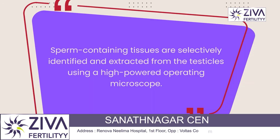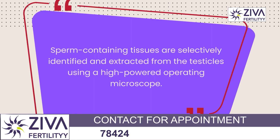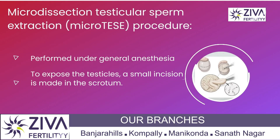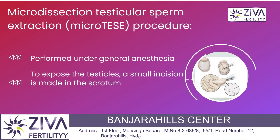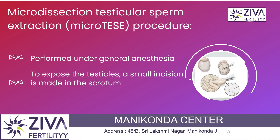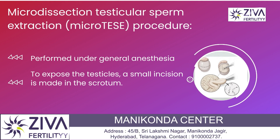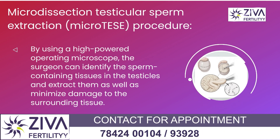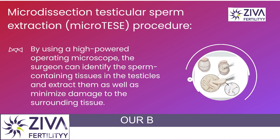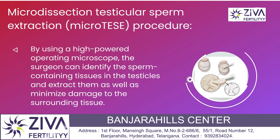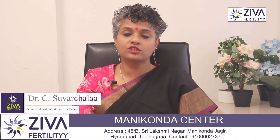Micro-TESE uses a very high powered operating microscope to selectively identify and extract sperm-containing tissue from the testicles. The procedure is typically performed under general anesthesia and involves making a small incision in the scrotum to expose the testis. The surgeon then uses the high powered operating microscope to identify and extract sperm-containing tissue while minimizing damage to the surrounding tissue.